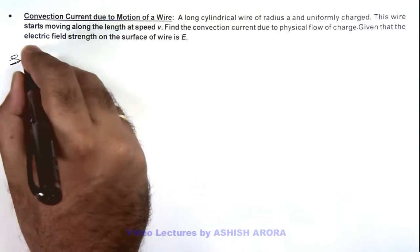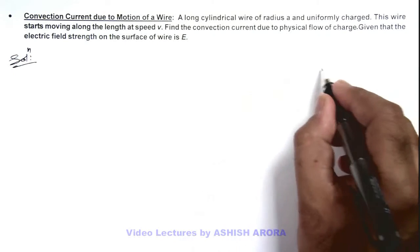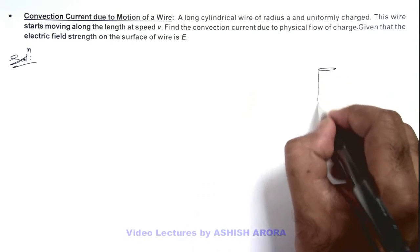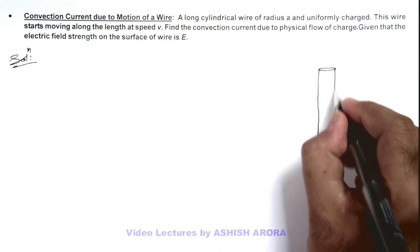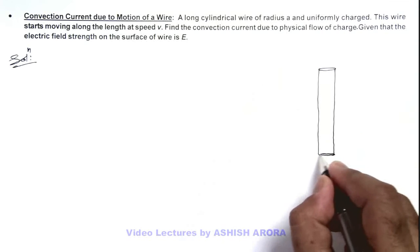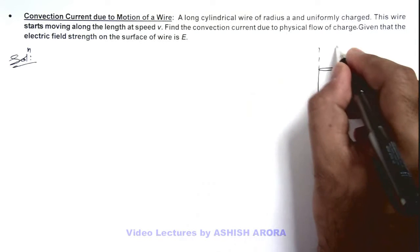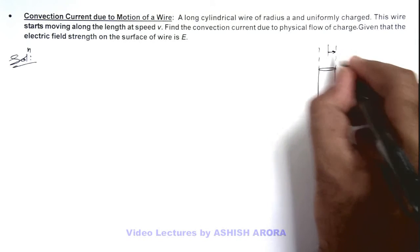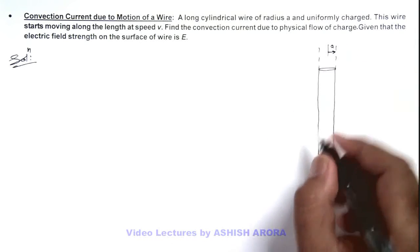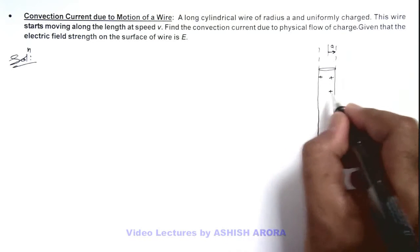In this situation, if we draw the wire, say this is a wire, this we consider as a long wire which is of radius a, and we are given that the wire is uniformly charged.